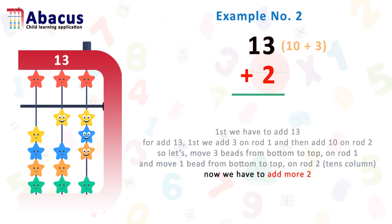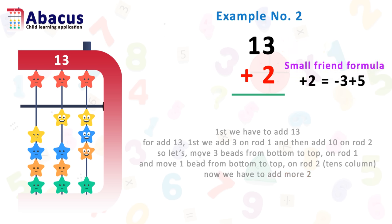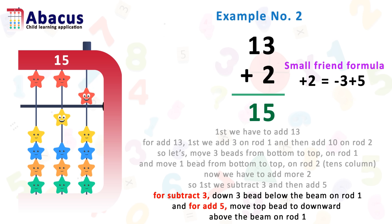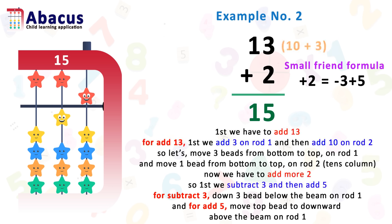Now we have to add 2 more. In the bottom we have just 1 bead, so we can't add 2 beads directly. Here we have to use the small friend formula for adding 2. The formula for 2 is equal to minus 3 plus 5. So first we subtract 3 and then add 5. For subtract 3, move 3 beads below the beam on rod 1 using the index finger. For add 5, move the top bead downward above the beam on rod 1, also using the index finger. The answer is 15.